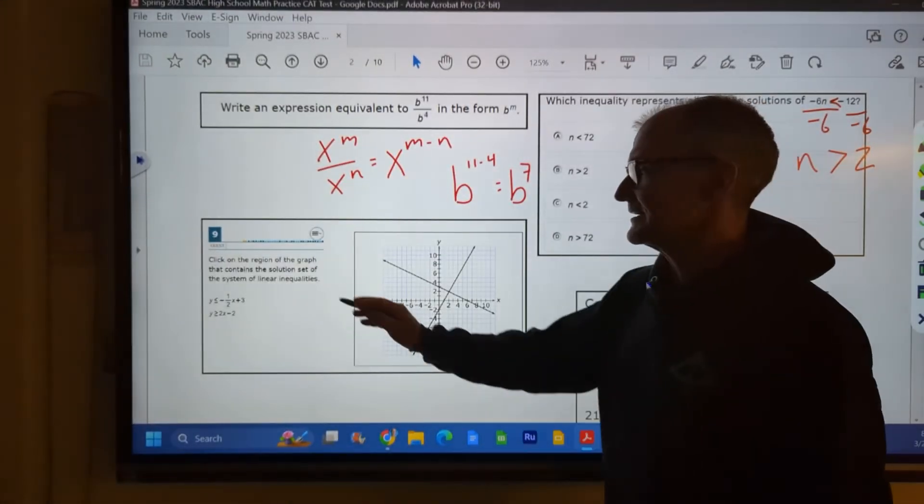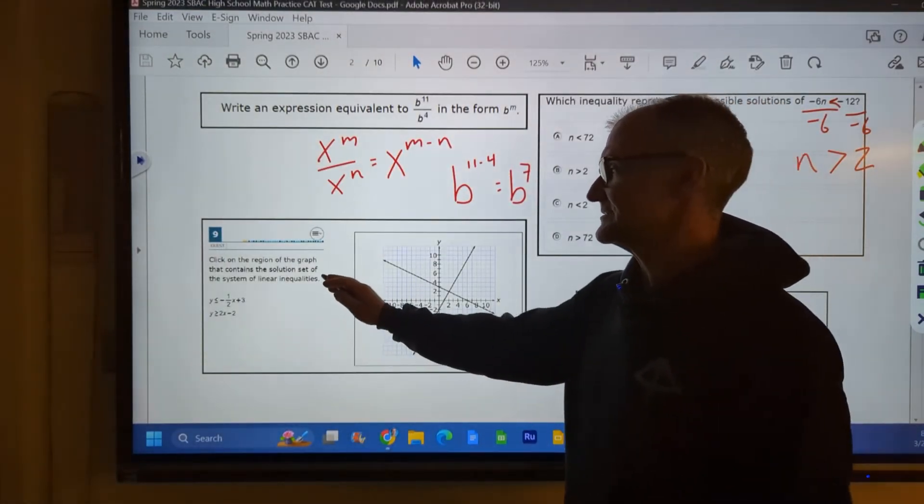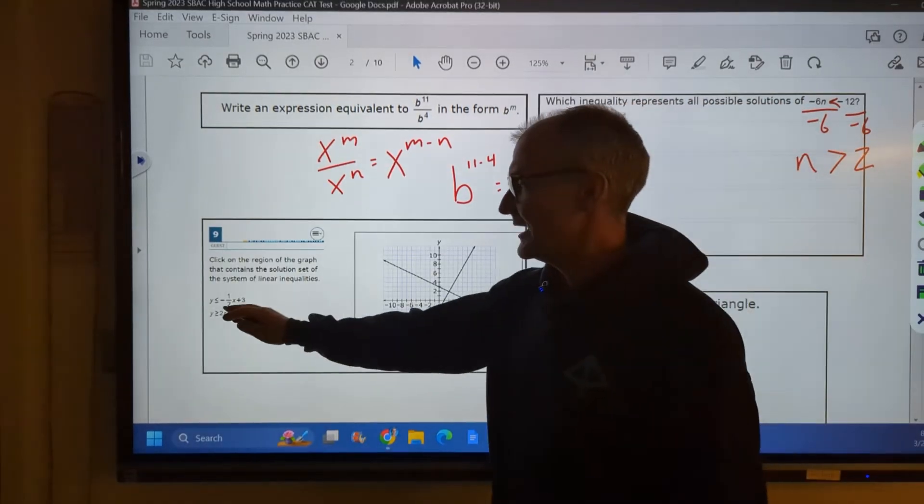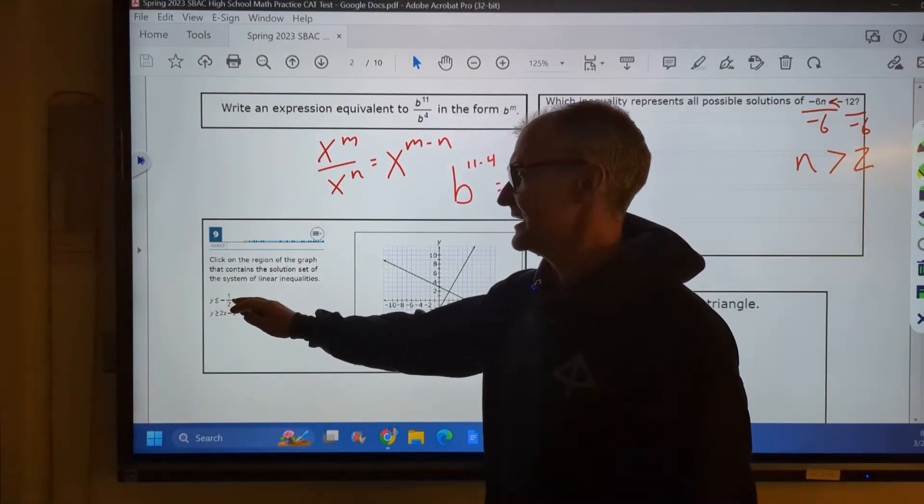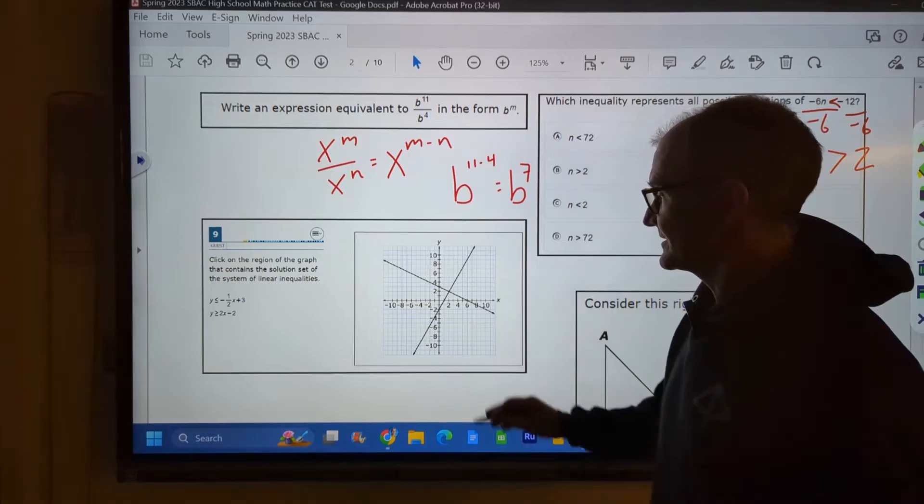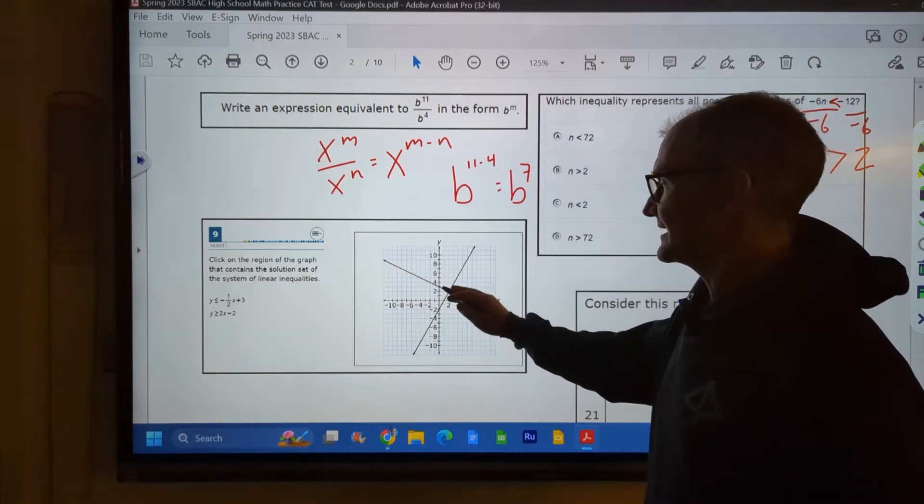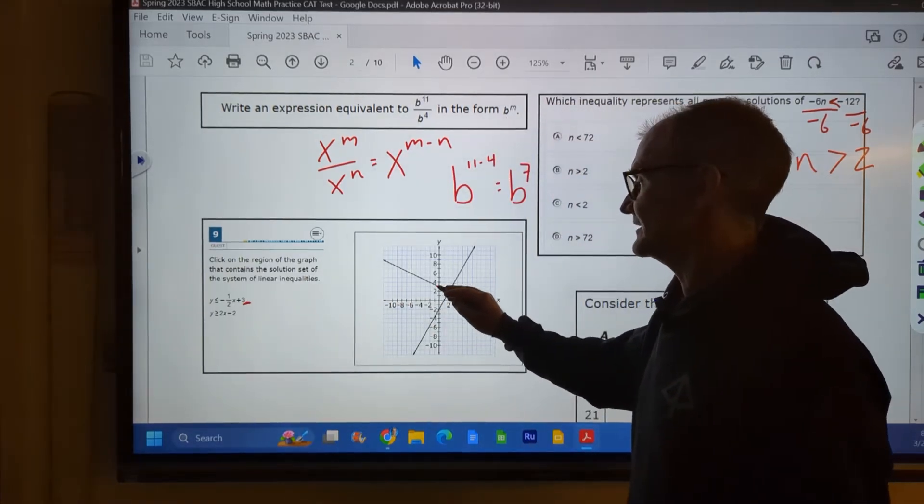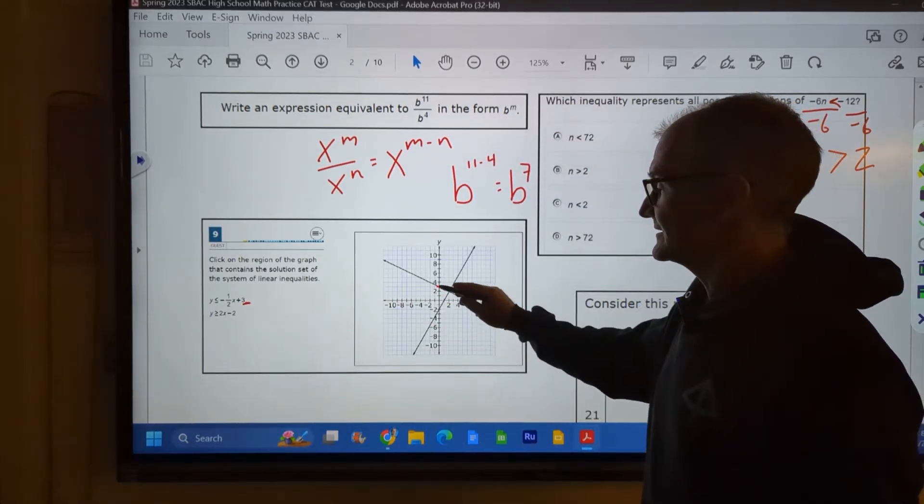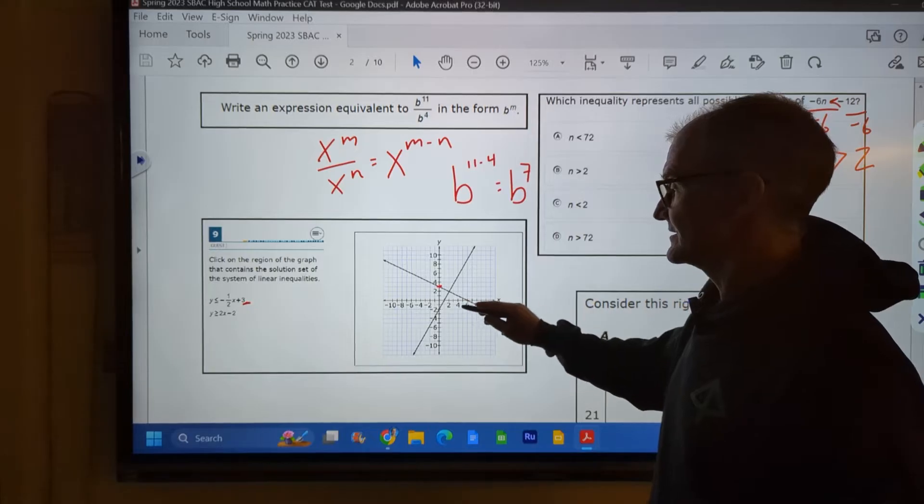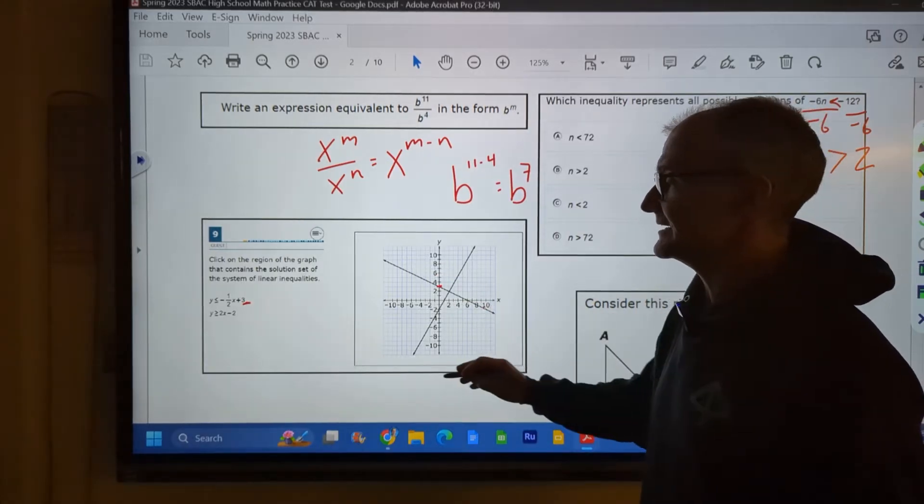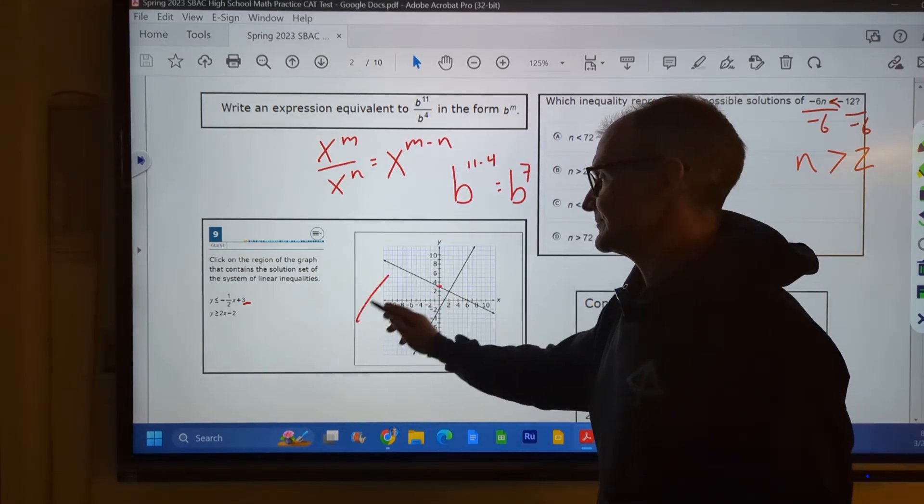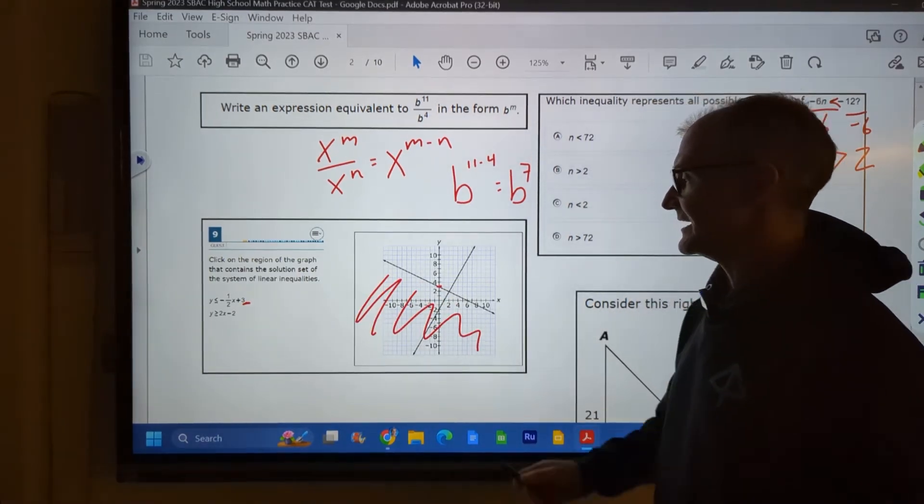Okay, over to this problem. Click on the region of the graph that contains the solution set for the system of equations. So y is less than negative 1 half x plus 3. So that has to be this line right here. It has a y-intercept of 3. So that thing goes right through 3. From 3, it rises negative 1, runs 2. So it goes like that. So that's that line. It is less than or equal to it. So it's everything below that line.